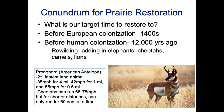Cheetahs can run faster — 65 to 78 miles per hour — but they can only go for 60 seconds at a time; it takes a lot of energy to go that fast even for that short of time. The reason pronghorns are so fast is because there used to be American cheetahs. The American cheetahs have died off, but we still have the pronghorn. It's an interesting thing to think about what our target should be for prairie restoration.